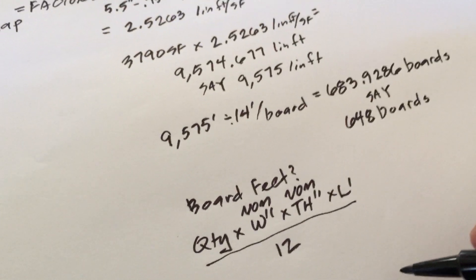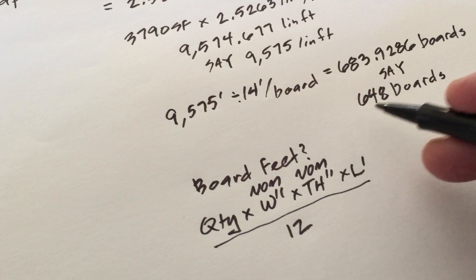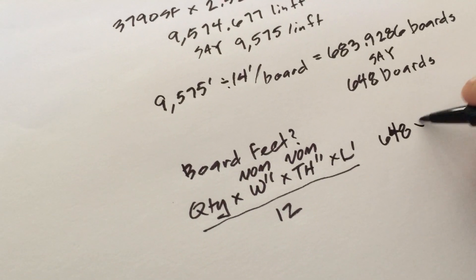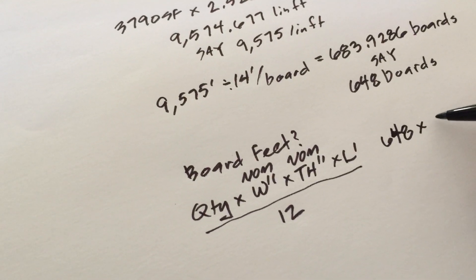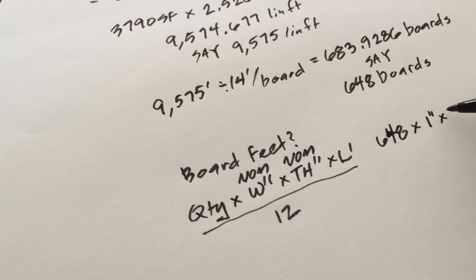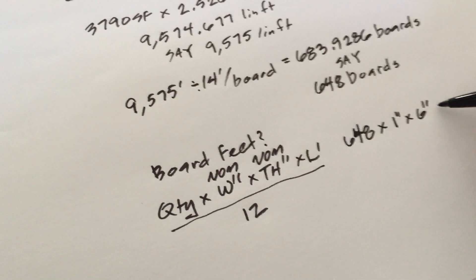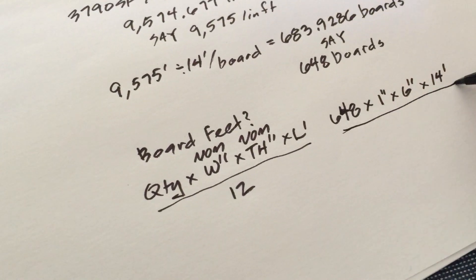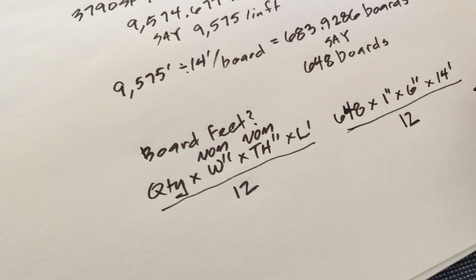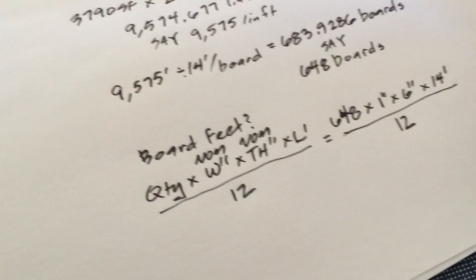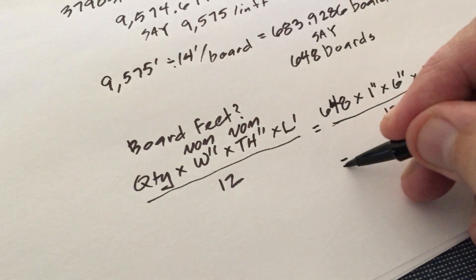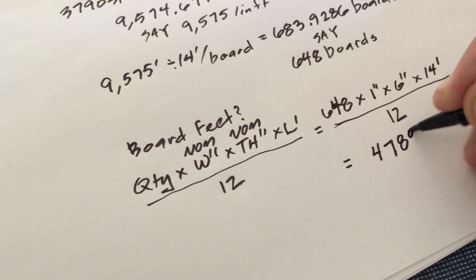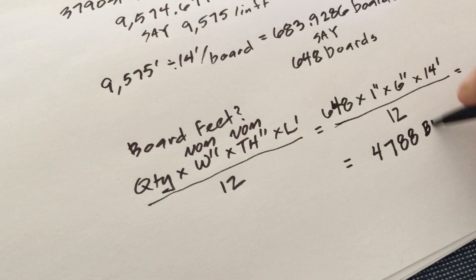So I'll take my quantity, 684 boards, times the thickness for siding is one inch. And this was six inches wide. And they are 14 feet long. And I divide all of that by 12. And I get 4,788 board feet.